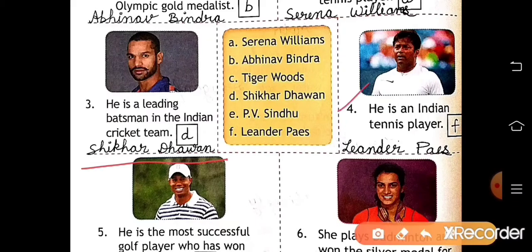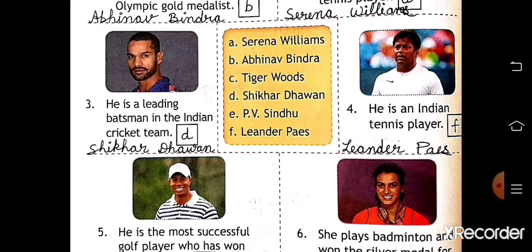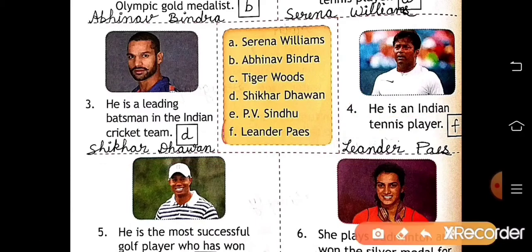Number four: he is an Indian tennis player. So who is he? Leander Pais. Leander Pais is at F number, so write F here.